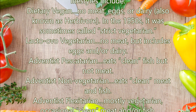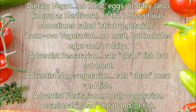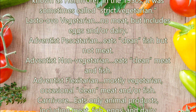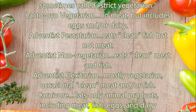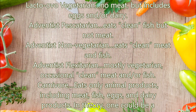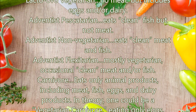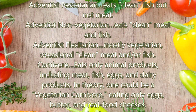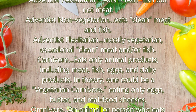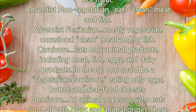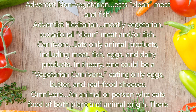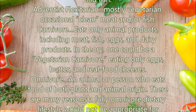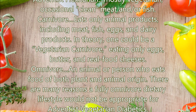Adventist Pescatarian — eats clean fish but not meat. Adventist Non-Vegetarian — eats clean meat and fish. Adventist Flexitarian — mostly vegetarian, occasional clean meat and/or fish. Carnivore — eats only animal products, including meat, fish, eggs, and dairy products.